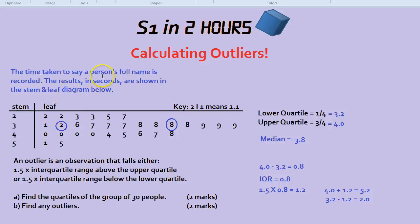The time taken to say a person's full name is recorded. The results in seconds are shown in the stem and leaf diagram below. The key 2 slash 1 means 2.1 seconds. Find the quartiles of the group of 30 people for two marks and find any outliers for two more marks.